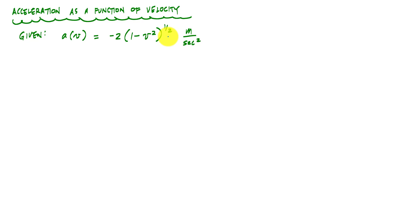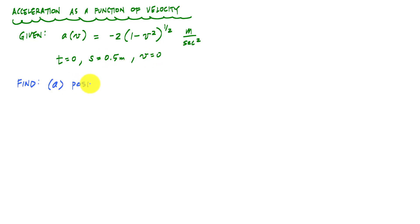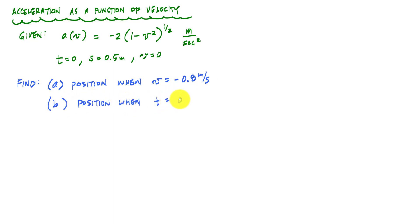We're also given some initial conditions: at time t equals 0, the position s is equal to 0.5 meters and the velocity is zero. What we'd like to find is the position when the velocity equals negative 0.8 meters per second, and also the position when the time is 0.2 seconds.